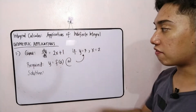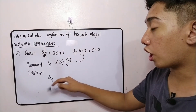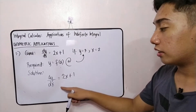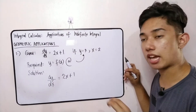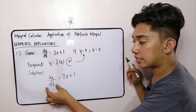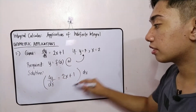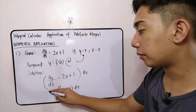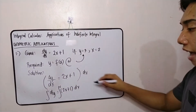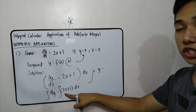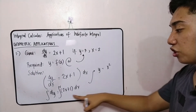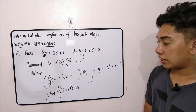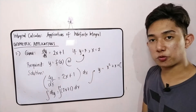Let's solve. We have dy over dx is equal to 2x plus 1. Using variable separable, we multiply both sides by dx, so dy equals (2x + 1)dx. Then we integrate both sides. The integration gives us y equals x squared plus x plus c, where c is the constant of integration. This is our general solution for the differential equation.